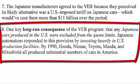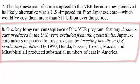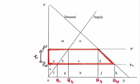One key long-run consequence of the VER program was that any Japanese cars produced in the U.S. were excluded from the quota limits, so Japanese automakers responded to this provision by investing heavily in U.S. production facilities. By 1990, Honda, Nissan, Toyota, Mazda, and Mitsubishi all produced substantial numbers of cars in America.